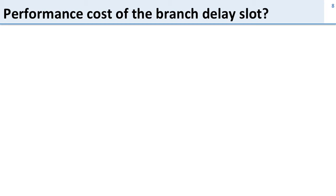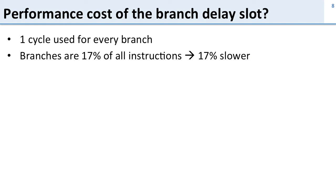So what is the performance of having this branch delay slot? How much does this really hurt us? Well, for every branch we're going to use one extra cycle. Branches are 17% of all our instructions, so we're going to be 17% slower. That's not so good, but if we can change our code around - that is, reorder our code to fill the branch delay slot - then we won't have this performance penalty.